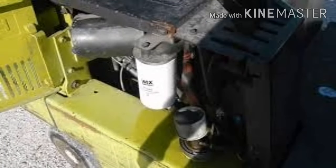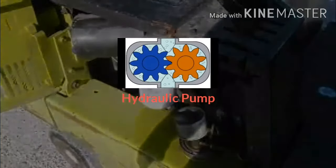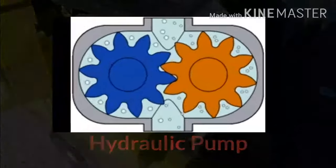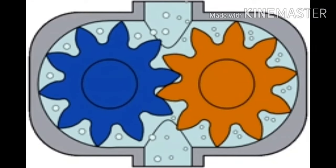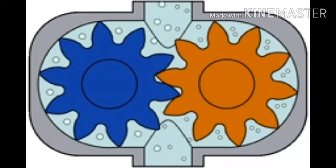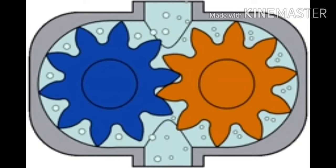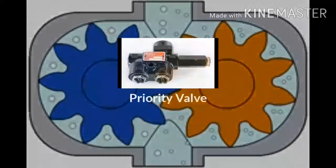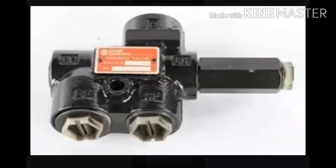The hydraulic tank is integrated into the frame of the vehicle and holds the hydraulic fluid. The pump produces a constant flow of hydraulic fluid to supply the control valve. Most forklifts use a gear-type pump, which consists of a pair of rotating gears that push the fluid in the opposite direction of the rotation.